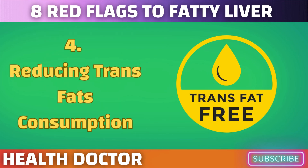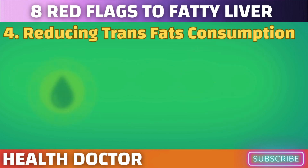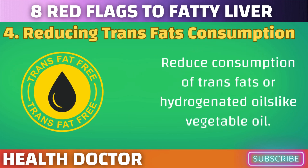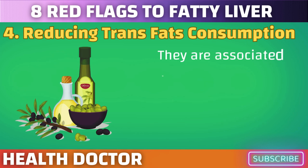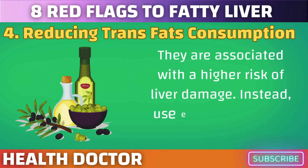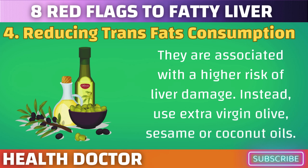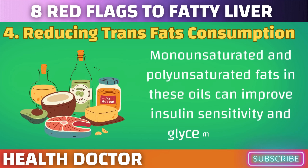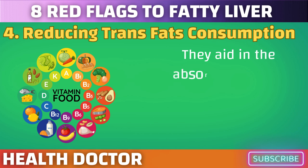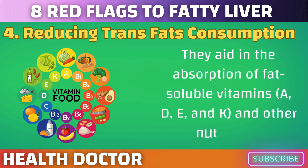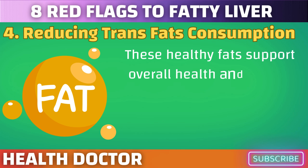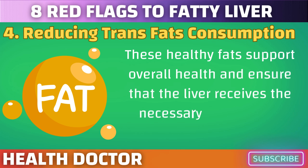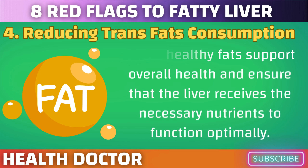Reduce consumption of trans fats or hydrogenated oils like vegetable oil, as they are associated with a higher risk of liver damage. Instead, use extra virgin olive, sesame, or coconut oils. Monounsaturated and polyunsaturated fats in these oils can improve insulin sensitivity and glycemic control. They aid in the absorption of fat-soluble vitamins A, D, E, and K, and other nutrients. These healthy fats support overall health and ensure that the liver receives the necessary nutrients to function optimally.